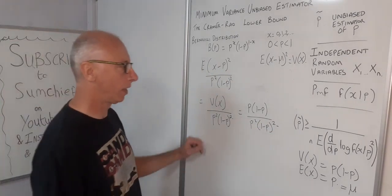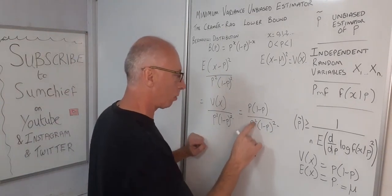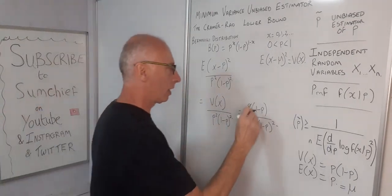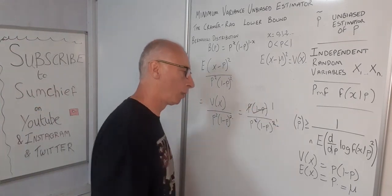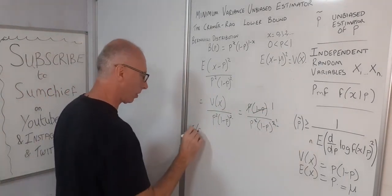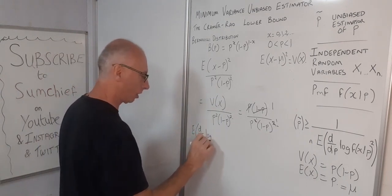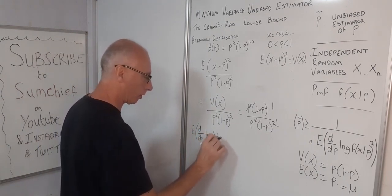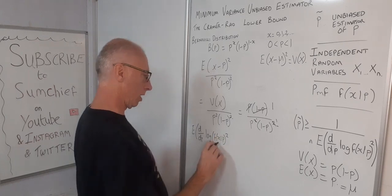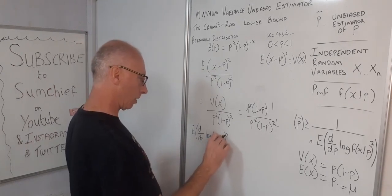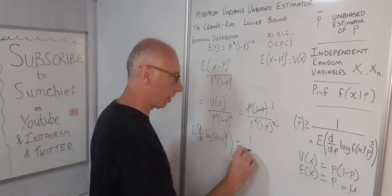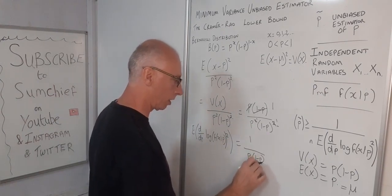Now we simplify: P in the numerator cancels with P squared in the denominator leaving just P, and 1 minus P in the numerator cancels with 1 minus P squared leaving just 1 minus P. Both cancel to 1, so the expectation of the derivative of log F of X given P, all squared, equals 1 over P times 1 minus P.